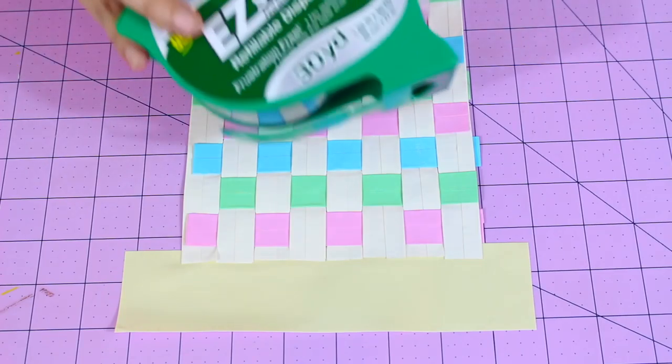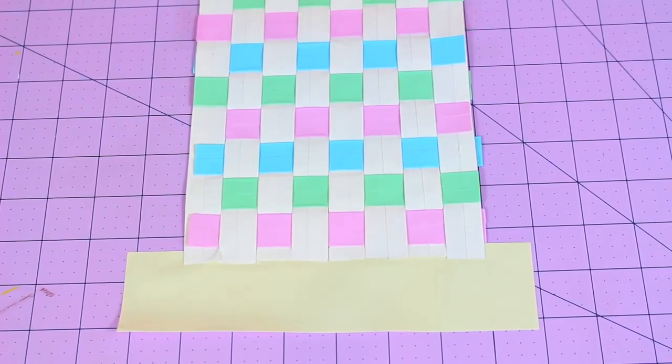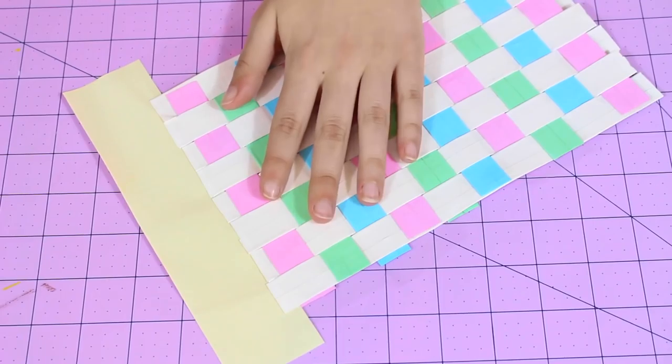Now I'm going to bring in my clear tape and I'm just going to clear tape the entire inside. Once you're done that, you want to take your ruler and your X-Acto knife and just trim down this white part.